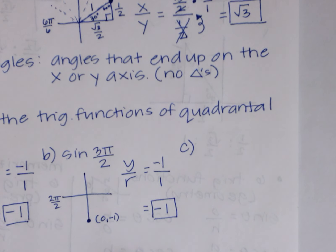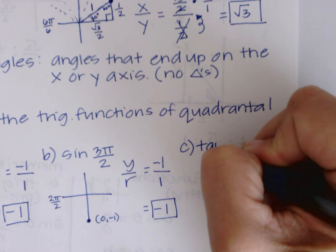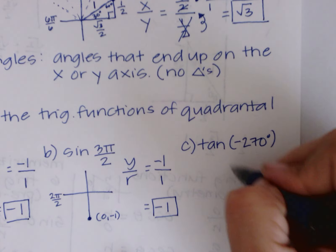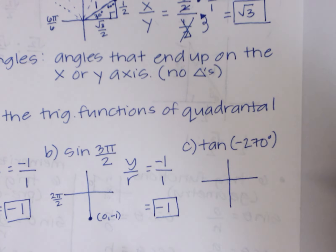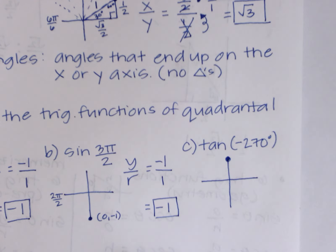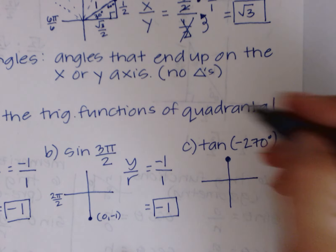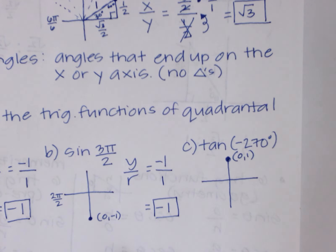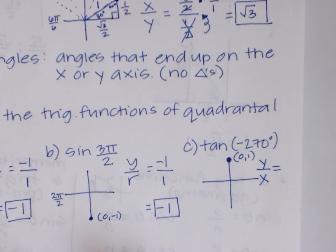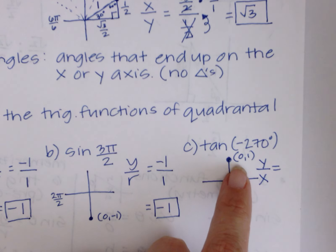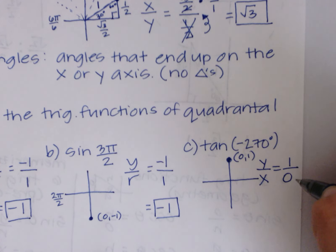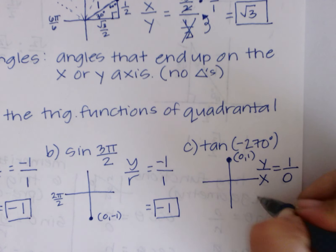Example 2c: tangent of negative 270 degrees. Negative angles go clockwise: -90, -180, -270 — landing at the top, the point (0, 1). Tangent = y/x: y is 1 and x is 0. You are not allowed to divide by zero, so the answer is undefined.